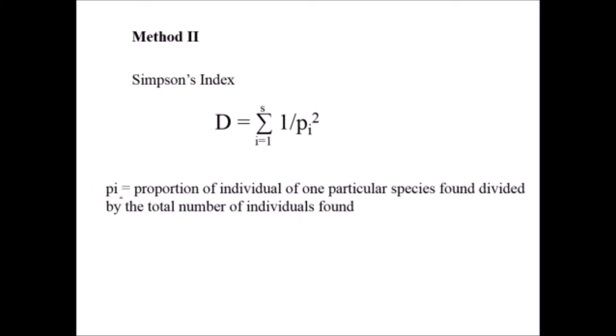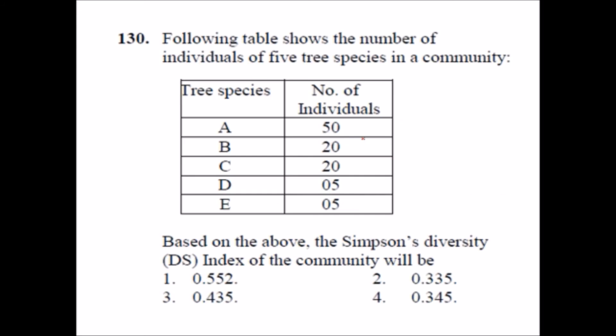Pi is the proportion of individuals of one particular species found divided by the total number of individuals found. And this pi I have also calculated while I was discussing about the Shannon index. So this was about the Simpson's index. But to calculate the Simpson's index we simply take the pi square. So I found this formula easier than the previous formula.